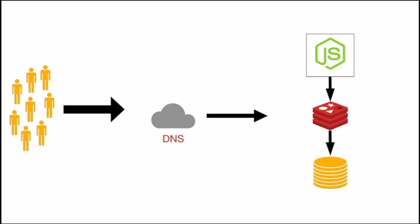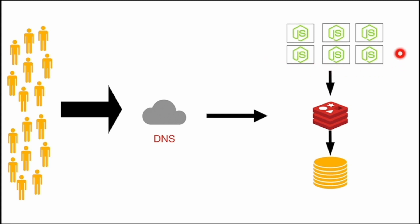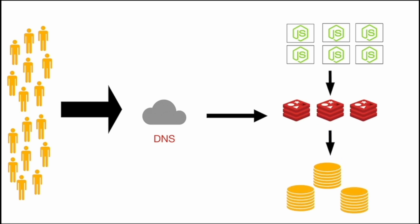Traffic on our system keeps increasing and more people are coming to our application. To tackle that traffic, we have to increase the capabilities and capacity of our system further. We increase the number of application server instances — instead of one, we now deploy multiple instances. Consequently, we also deploy multiple instances of the cache server and increase the number of database nodes. The system is now hosted across multiple application servers, multiple cache servers, and multiple database nodes.